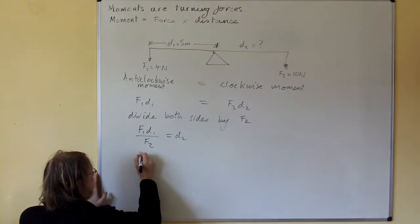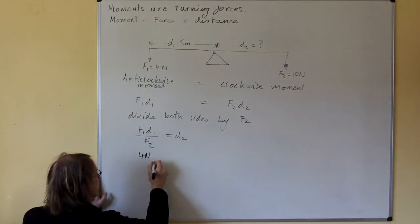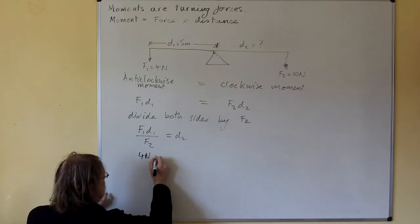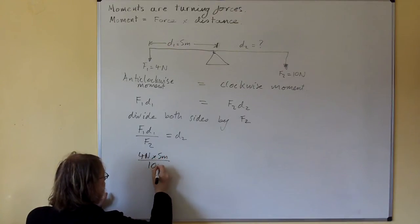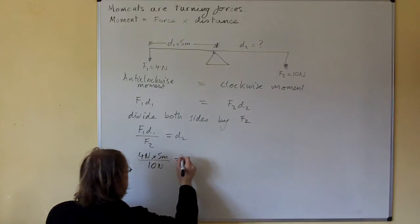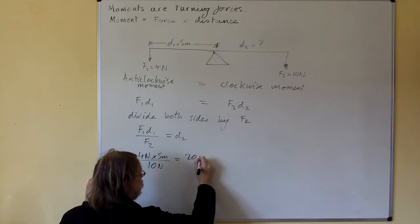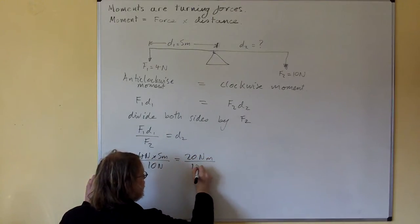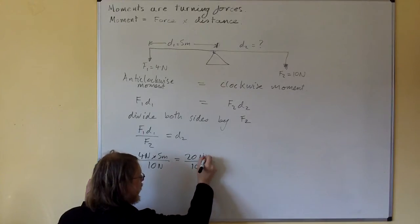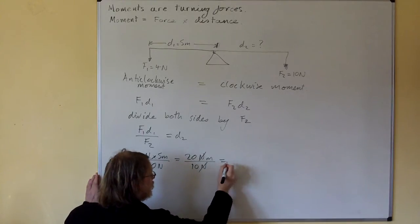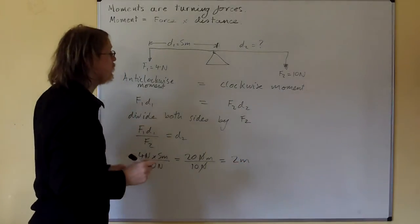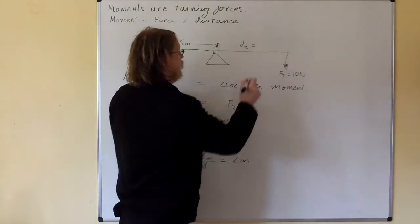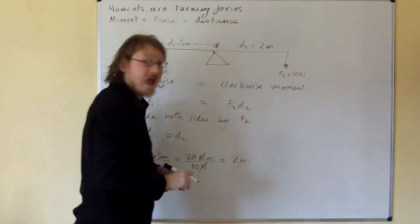Now, f1 is 4 newtons, d1 is 5 metres, f2 is 10 newtons, so this becomes 20 newton metres divided by 10 newtons. The newtons cancel, and that gives us 20 divided by 10, 2 metres. So we've solved our problem, d2 equals 2 metres. Excellent. Let's do a more involved problem.